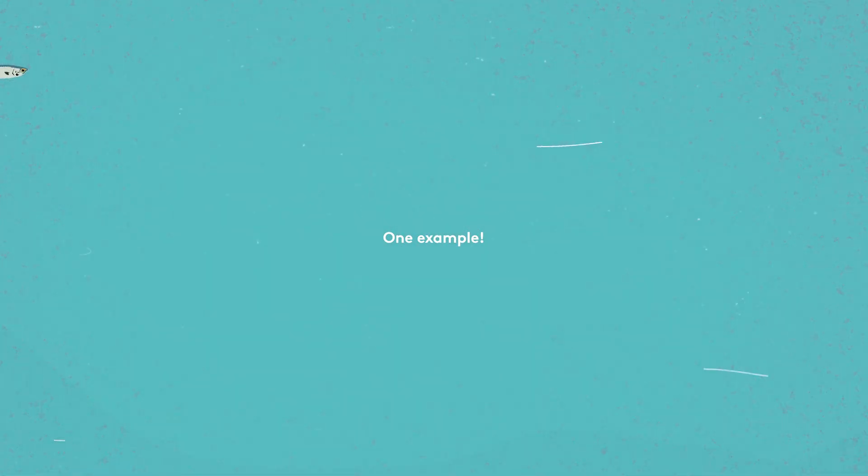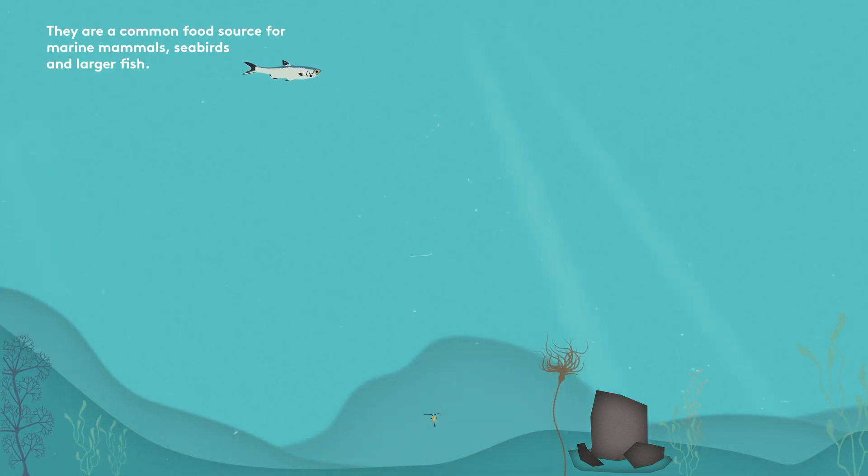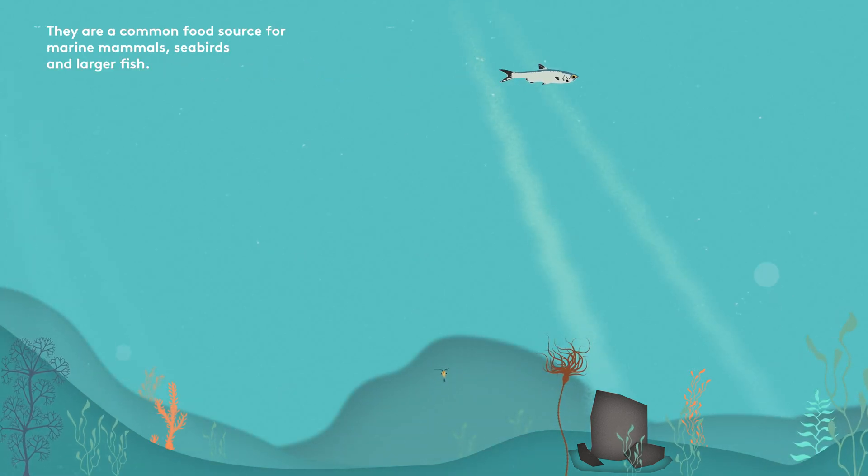One example: Anchovies are small fish. They are a common food source for marine mammals, seabirds and larger fish.